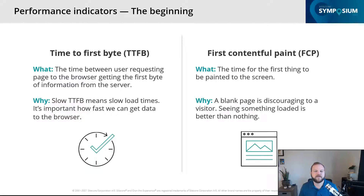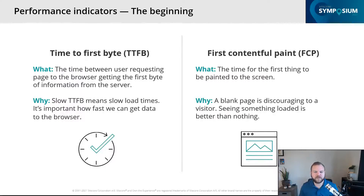Our second indicator is first contentful paint — the time it takes for the first thing to get painted onto the screen. This is important because a blank page is discouraging to our visitor. If a user sees nothing, they're not going to understand that things are loading. So first contentful paint is important because it's important to get something loaded onto the screen.